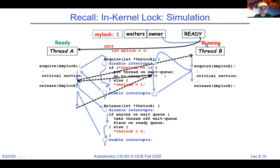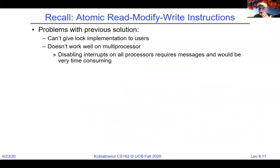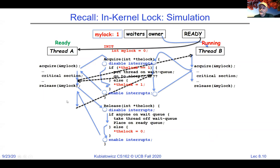Now, some problems with that disable-interrupt solution. First, you can't give this lock implementation to users because you can't allow them to enable and disable interrupts — way too dangerous. We could expose acquire and release as system calls, but the downside is that grabbing a lock would require a system call, which is expensive, seriously limiting the number of locks per unit time. We'd like something running at user level rather than in the kernel.